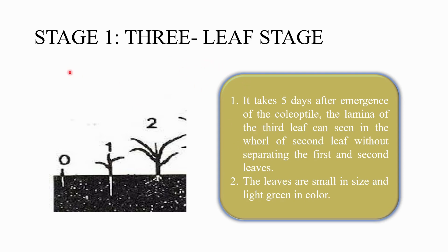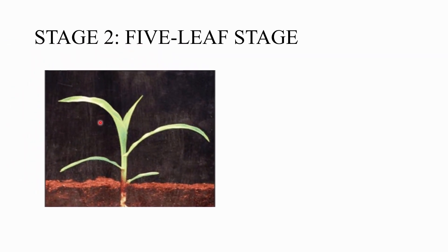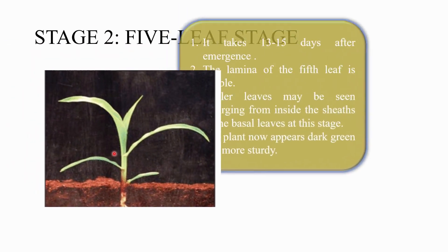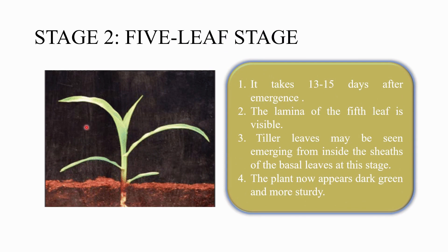The second stage is the five leaf stage. It takes 13 to 15 days after emergence. The lamina of the fifth leaf is visible, and tiller leaves may be seen emerging from inside the sheaths of the basal leaves. At this stage, the plant appears dark green and more sturdy in nature.